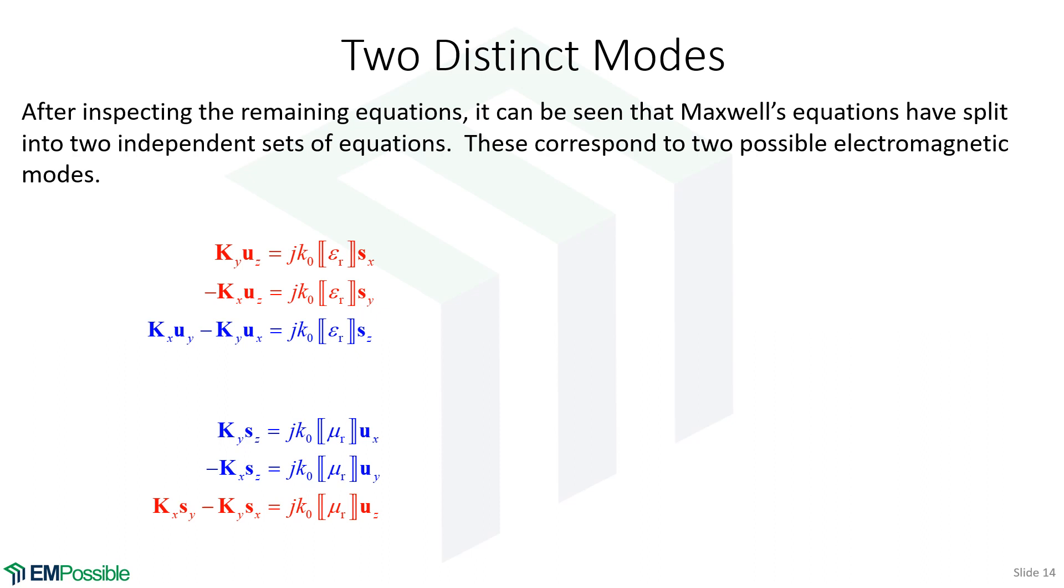Here, I've written those same two groups of equations, but I color-coded them. And if we stare at this long enough, what we'll see is that the equations in red do not contain any of the terms as the equations in blue. The equations in red only contain SX, SY, and UZ. Those don't appear in any of the blue equations. And the blue equations have UX, UY, and SZ. So, in fact, what has happened is Maxwell's equations has separated into two independent sets of three equations.